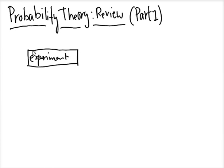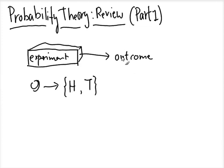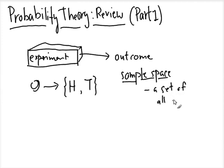And from this experiment, we can observe an outcome. So let's look at some examples. Suppose I have a fair coin and I toss the coin once — so I can get a head or I can get a tail. A set of all possible outcomes is called a sample space. We usually refer to that as S — sample space S.